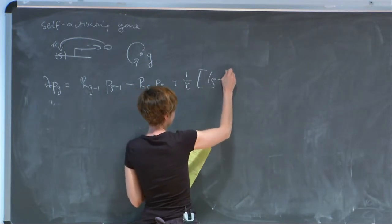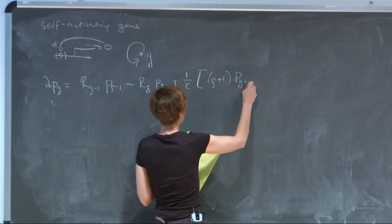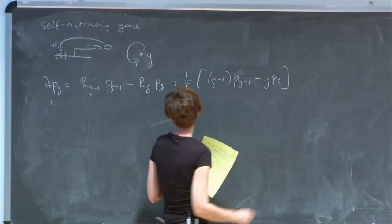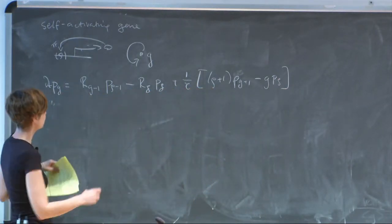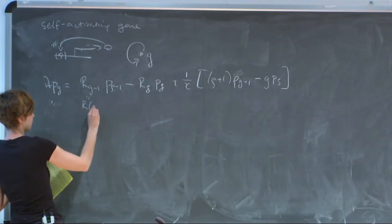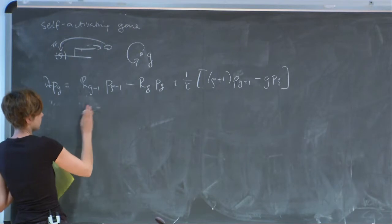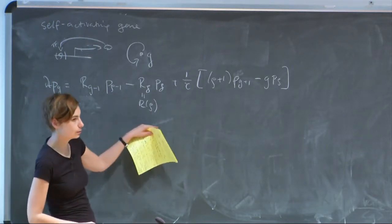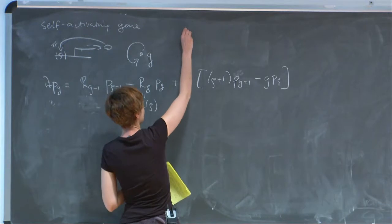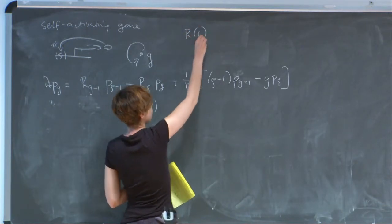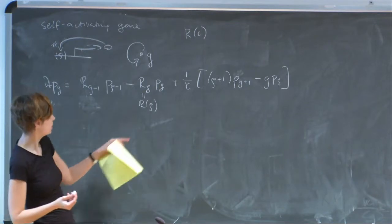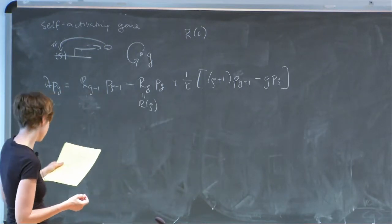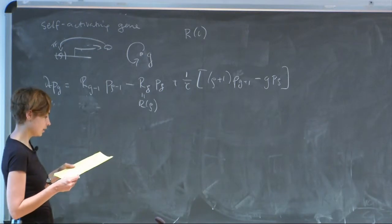Now what changes is that the production rate is a function of the number of proteins that it produces. The degradation doesn't change, but the production does. So the production rate is a function of the number of proteins — how much protein you make depends on how much you have. Before we had the production rate as a function of an external concentration; now it's no longer external, it depends on the number of proteins actually produced.